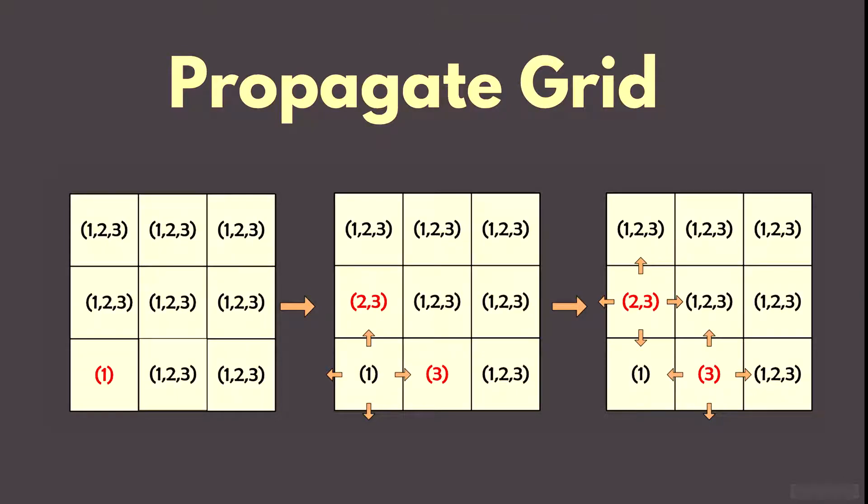In the last video we talked about collapsing a cell, which was choosing a solution out of a list of possible values. In this video we will take a look at the second step: propagation. Last video we set the pattern with index one in the bottom left corner cell as the solution. Now let's walk through an example.